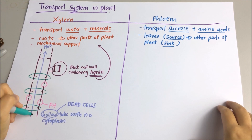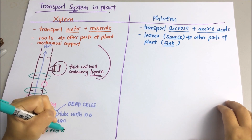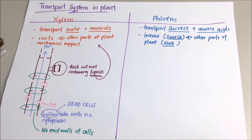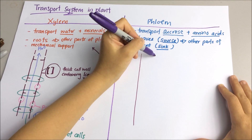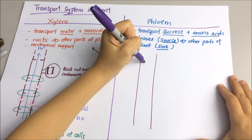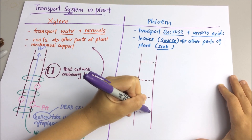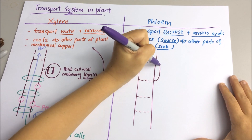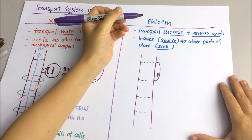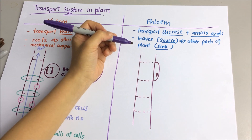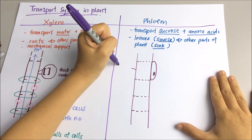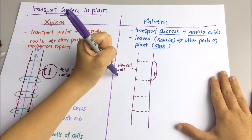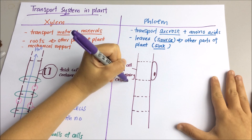The end walls of the cell will be disintegrated in order to form a continuous hollow tube. Now let's have a look at the phloem tissue. Unlike the xylem, phloem tissue is made out of columns of living cells joined end to end, which contain strands of cytoplasm but no nucleus. The wall is thinner compared to xylem and only contains cellulose without lignin.